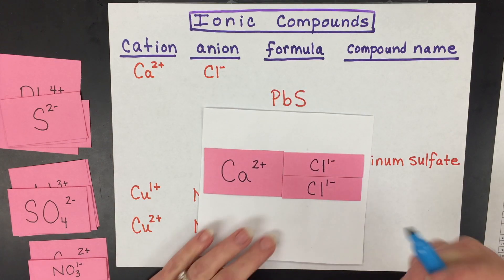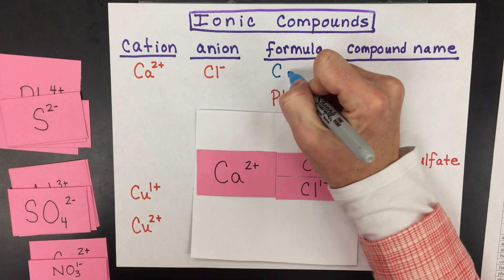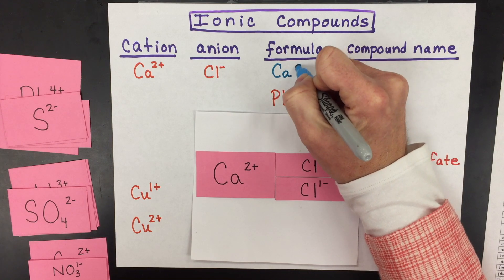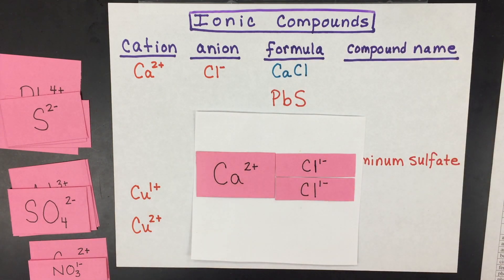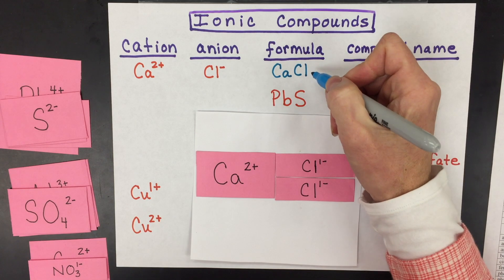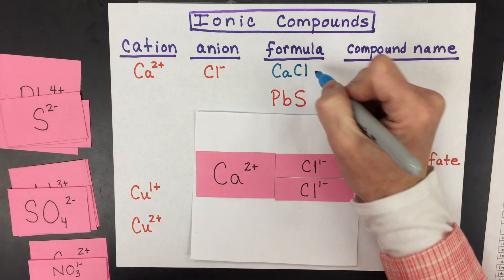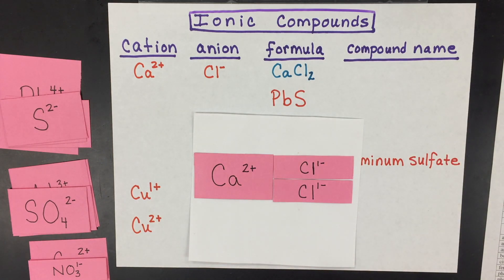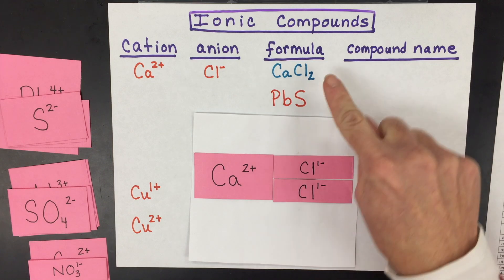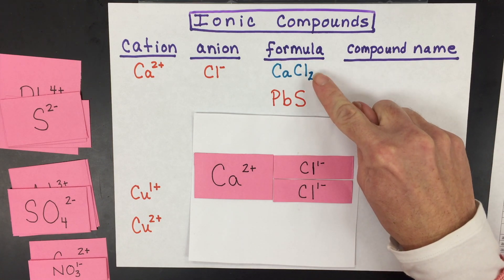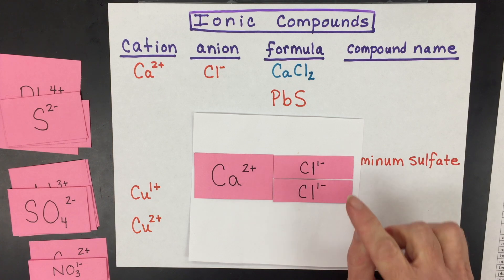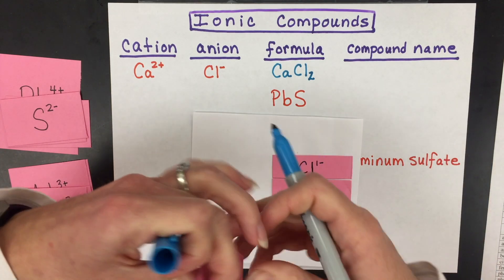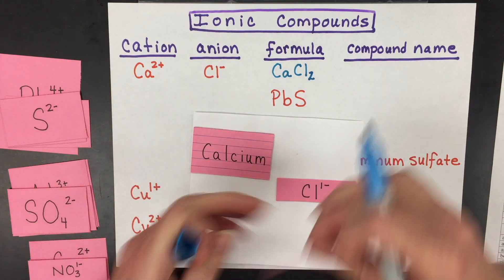So to write that correctly, a chemist uses subscripts. So you would have Ca, Cl, the metal is first or the cation is first and the anion is second in the formula. And then you're going to need to denote that you have two of those chloride ions, and so that's why that subscript is there. It is not there because chlorine is diatomic. It is there because you need two chloride ions for every one calcium ion.